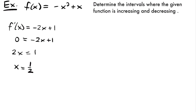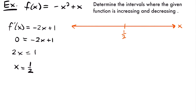At x equals 1 half, our function has the potential to switch from increasing to decreasing or vice versa. Drawing a number line with the critical value labeled, all values to the left are less than 1 half and all to the right are greater. This gives us two intervals: from negative infinity to 1 half, and from 1 half to positive infinity.